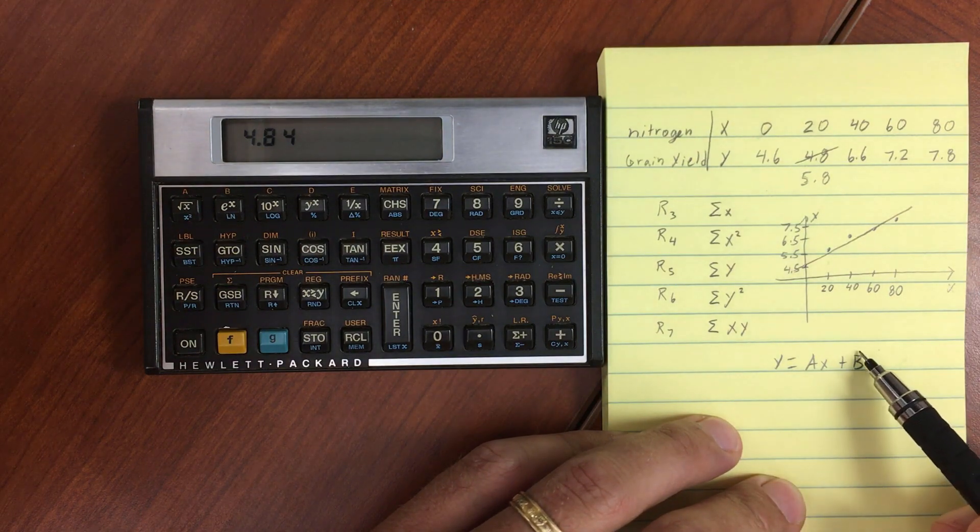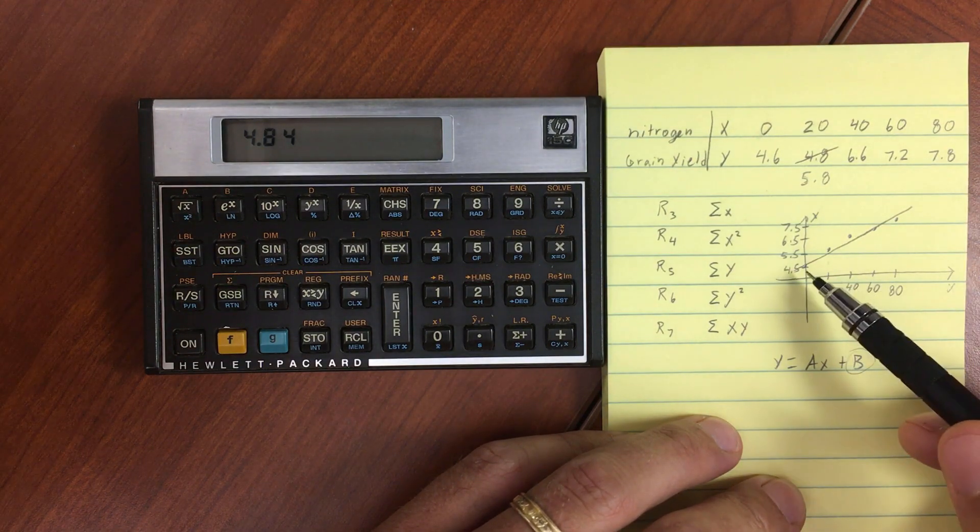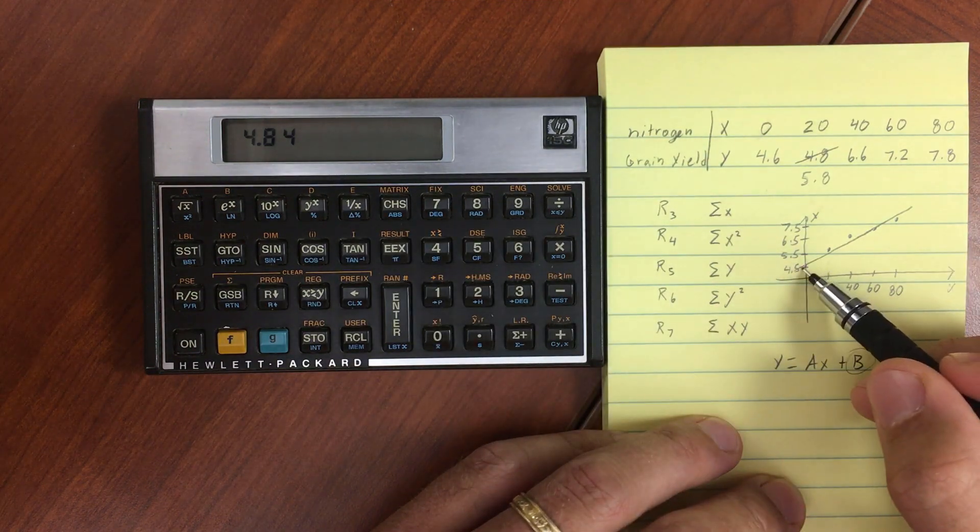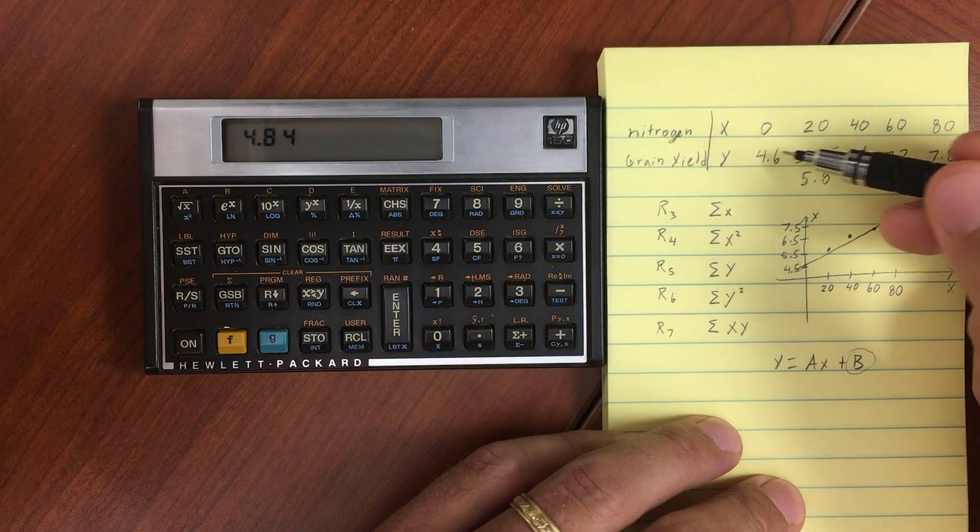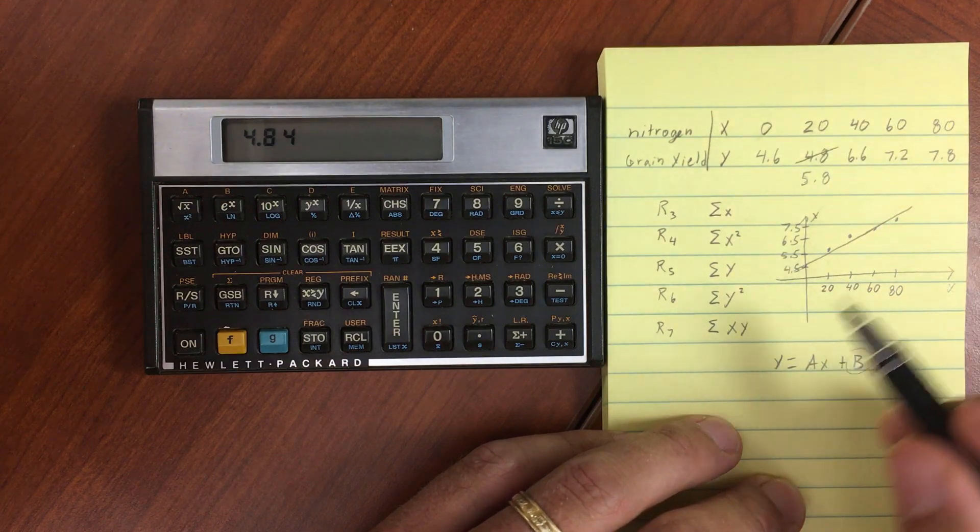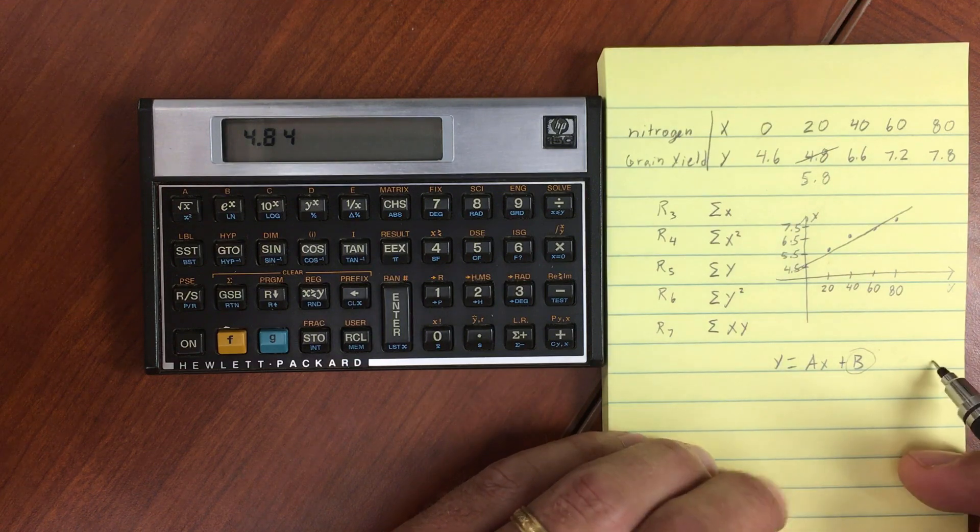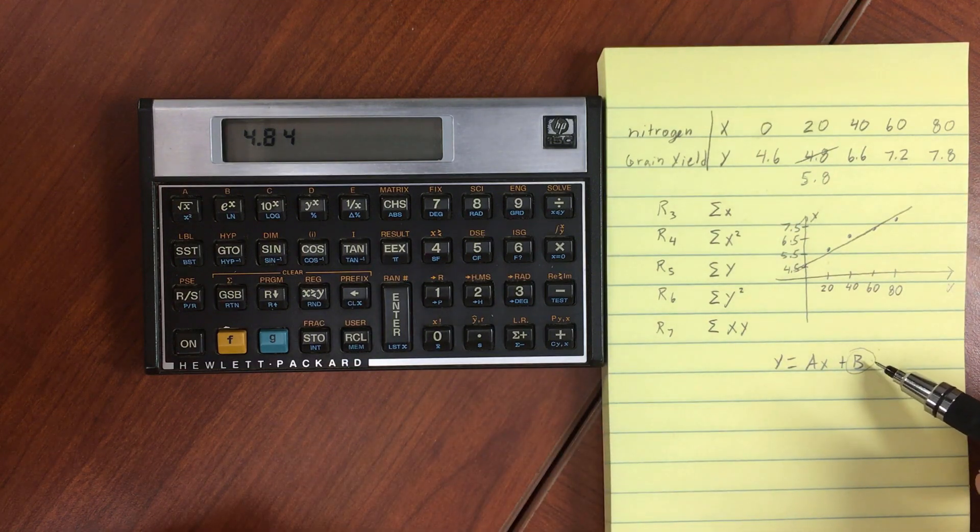This is going to give us our Y-intercept. That 4.84 is our Y-intercept, which we know is 4.6. So this has fitted all the rest of the lines, and it's a little bit more than reality. Our B is 4.84.